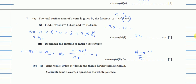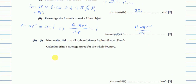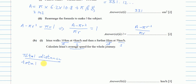Now let's look at part b1. Rina walks 10 kilometers at 4 kilometers per hour, and then a further 8 kilometers at 5 kilometers per hour. We have to find the average speed. The formula for average speed is total distance over total time. Total distance is 10 plus 8, which is 18.